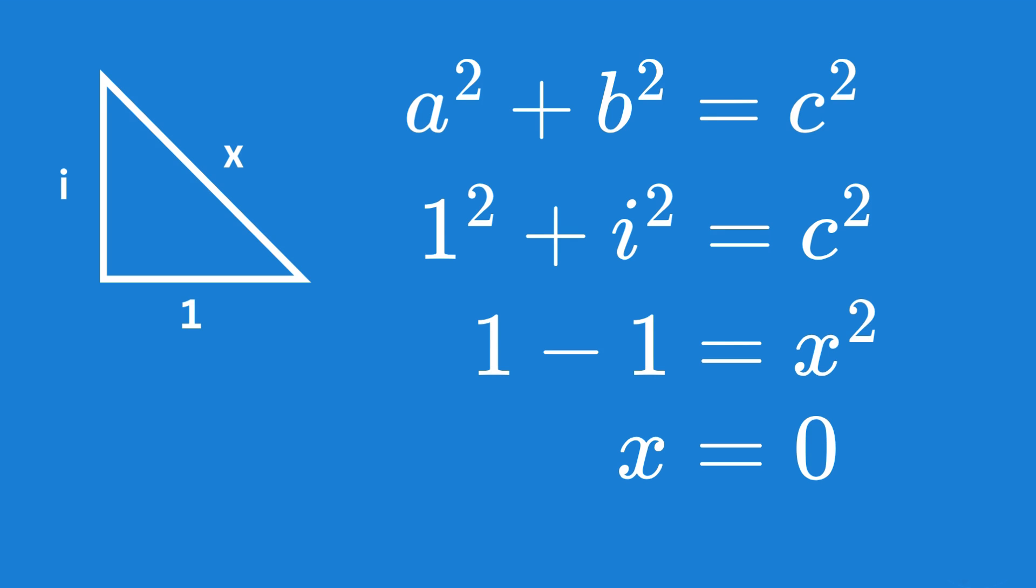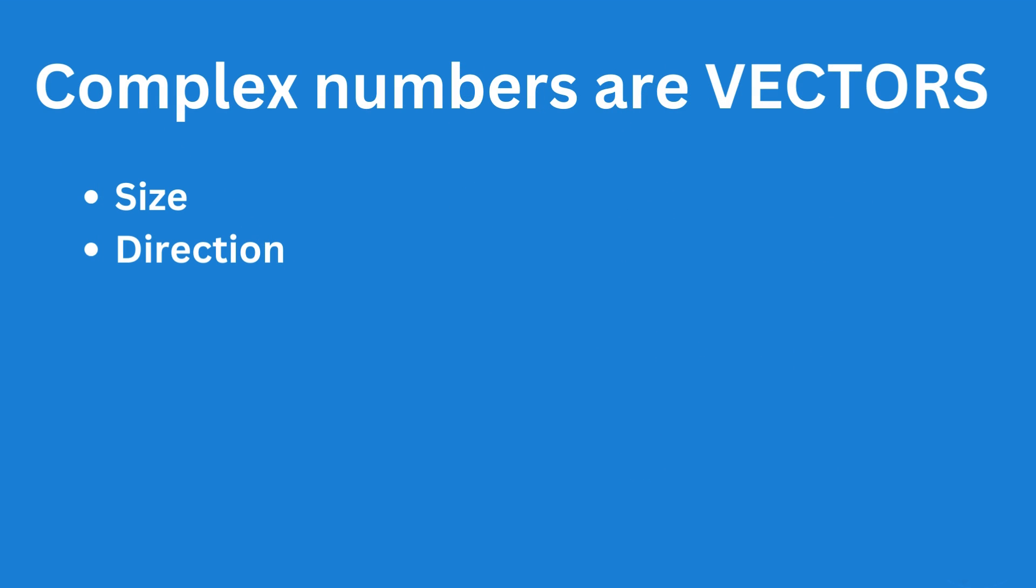What is usually forgotten here is that complex numbers like i and real numbers like 1 are vectors. They represent a displacement from the origin point zero, and this is how all complex numbers are defined.